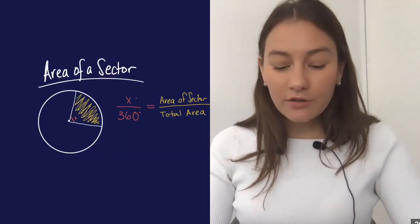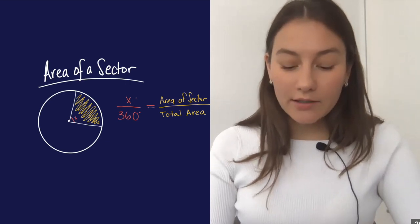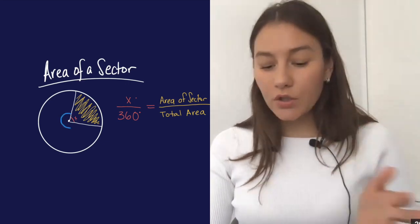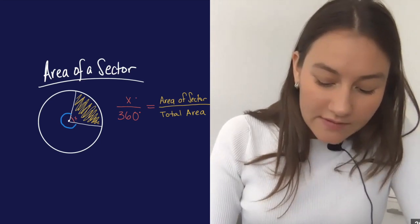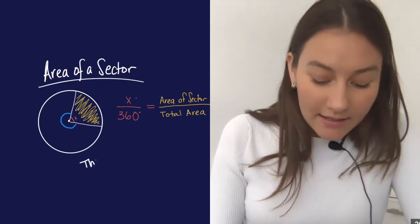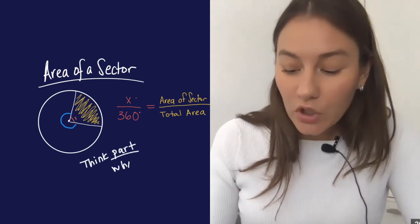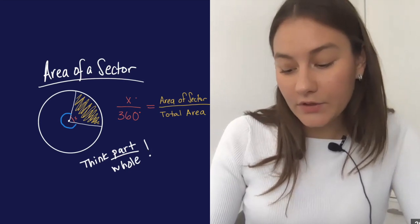All right, last little fact, area of a sector. So same concept as arc length, we're going to do part to whole. So we know that your angle of this little sector is X, and it's going to be over 360. And your area of the sector is going to be over the total area of the circle.